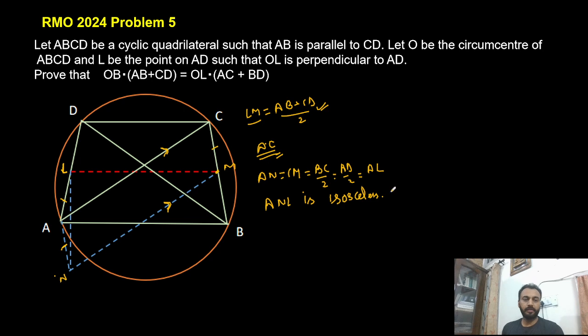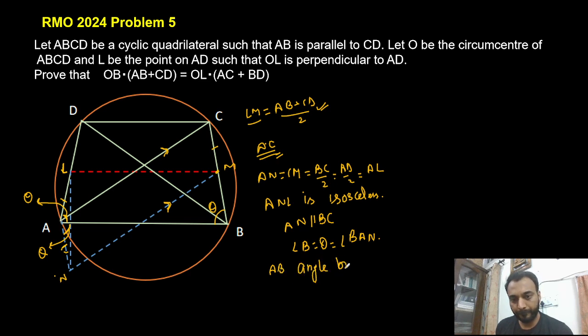Now second thing I can say that AB is an angle bisector of angle NAL. The reason being if I say this angle is theta then this is also theta then this angle is also theta by alternate angles because AN is parallel to BC so angle B which is theta is equal to angle NAB.